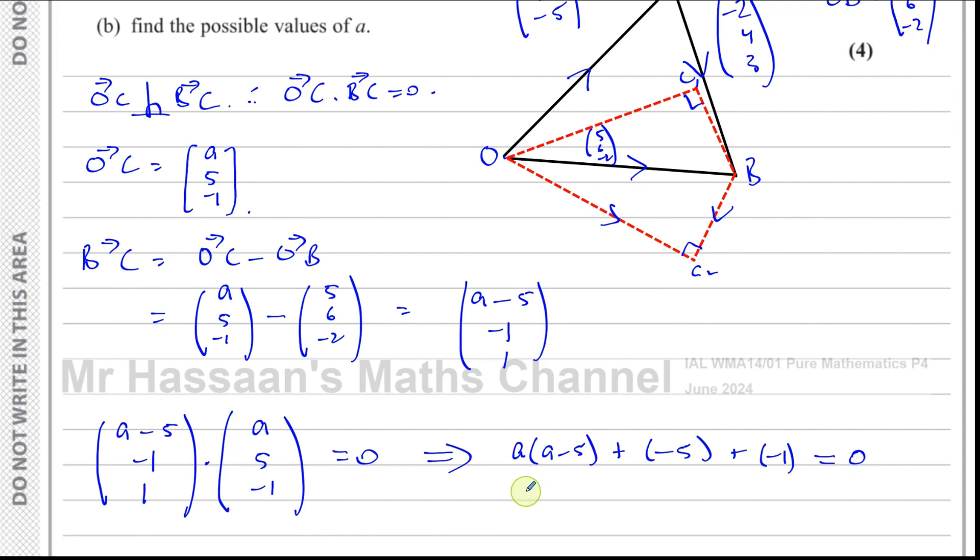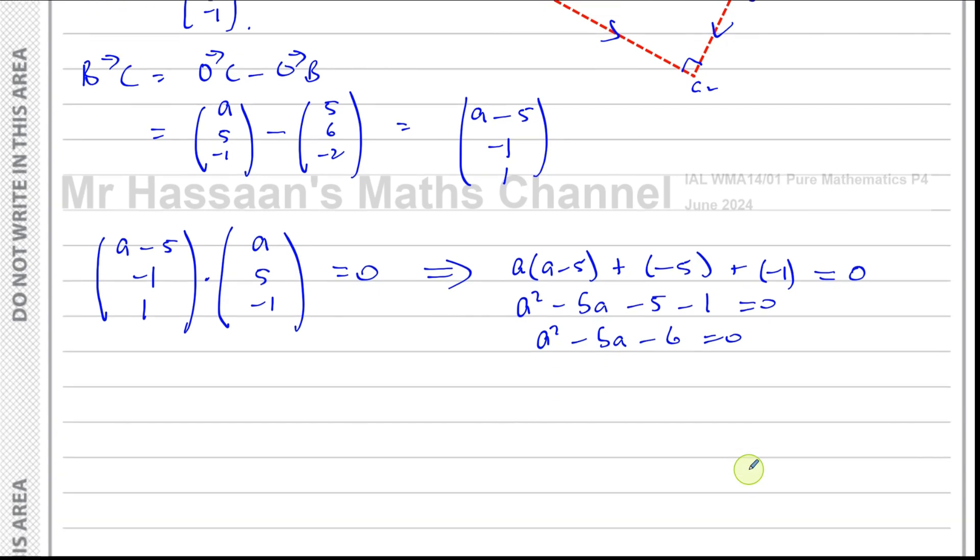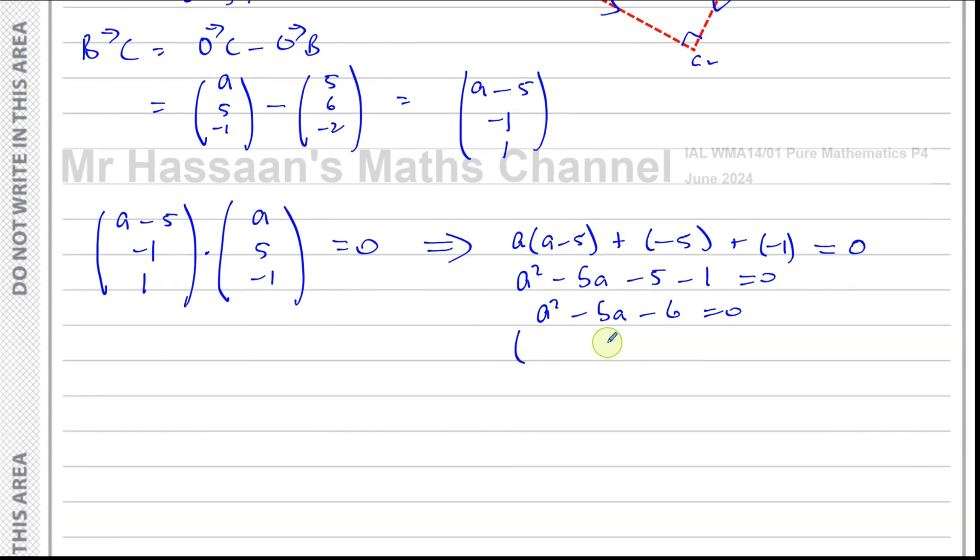This gives you a squared minus 5a minus 5 minus 1 equals 0. So you have a squared minus 5a minus 6 equals 0, which is a quadratic equation. If we solve this by factorizing, I think 6 and 1 will work. So a minus 6 and a plus 1, yes that's right.